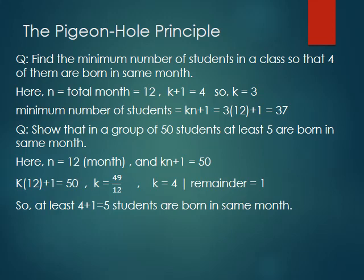Question 1: Find the minimum number of students in a class so that four of them are born in the same month. Here n equals 12 (total months), k plus 1 equals 4, so k equals 3. Therefore the minimum number of students is kn plus 1 = 3×12 + 1 = 37.